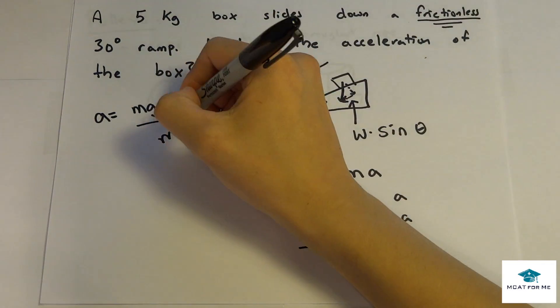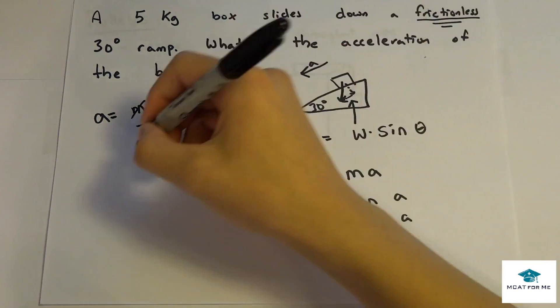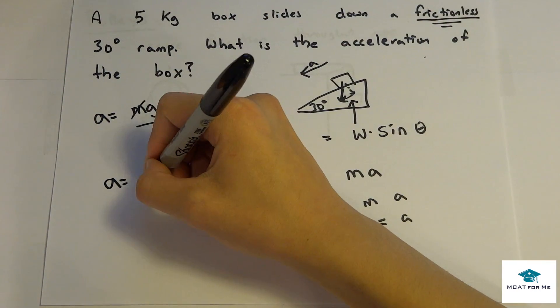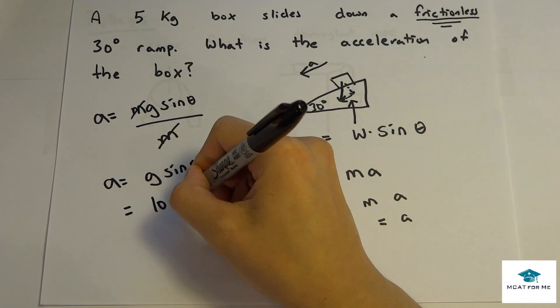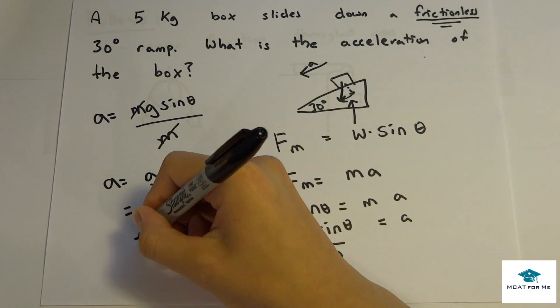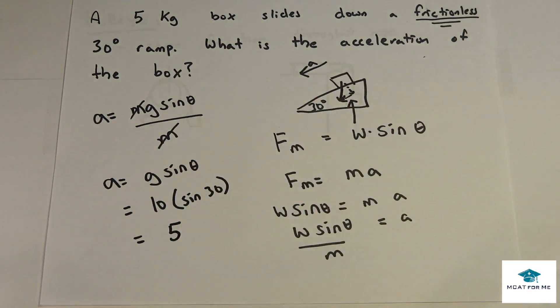And if we cancel this out, we'll see that the m's don't even matter. So the acceleration equals g sine theta, and it's 10 times sine of 30. So this would be 5, because remember sine 30 is 1 half. So we know that the net acceleration of the box will be 5 meters per second squared.